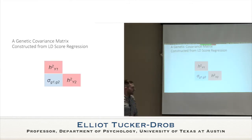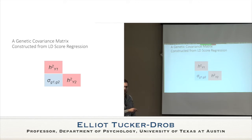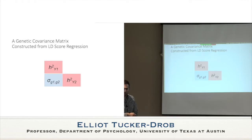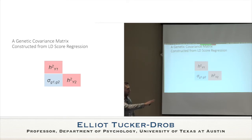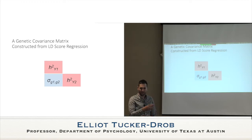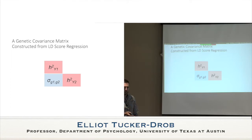Taking the slope of that line — where the Y axis is the product of Z statistics rather than the squared Z statistic — and doing the same math, you can figure out the genetic correlation or genetic covariance. You can then construct matrices with heritabilities on the diagonal, which we call genetic variances, and co-heritabilities or genetic covariances off the diagonal. This is the simplest form of a genetic covariance matrix.